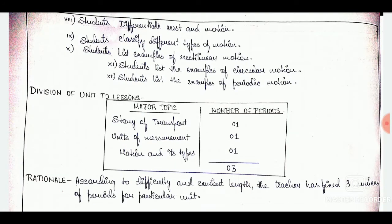For the division of unit to lessons, we need to mention the number of periods required to complete the particular unit. We divide the unit into major topics and write the number of periods required to complete each. For example, 'Story of Transport' will take one period, 'Units of Measurement' will take another period, and 'Motion and its Types' will take one period — so in total, three periods are required. If your unit takes seven periods, you mention accordingly how many periods each major topic requires.